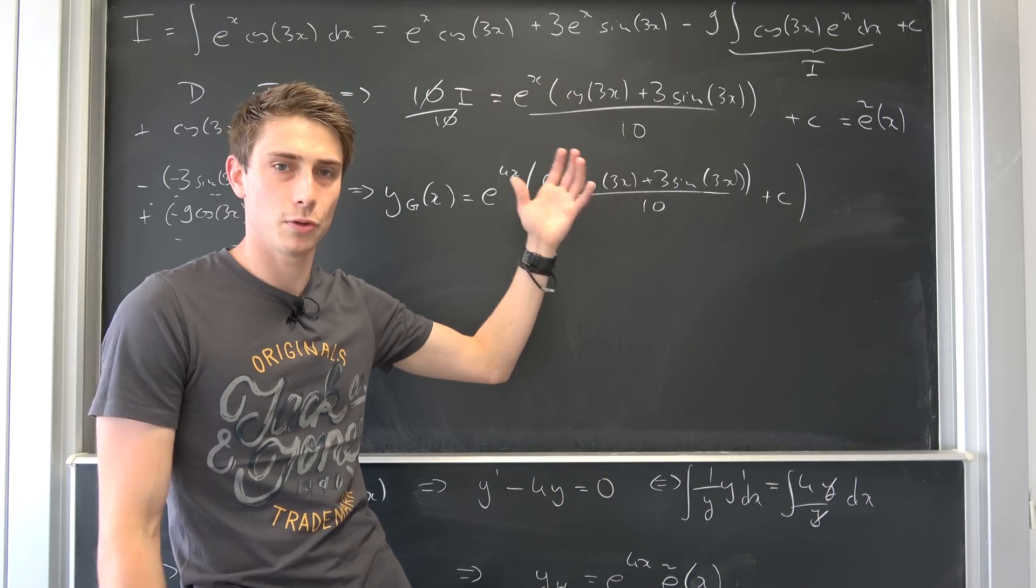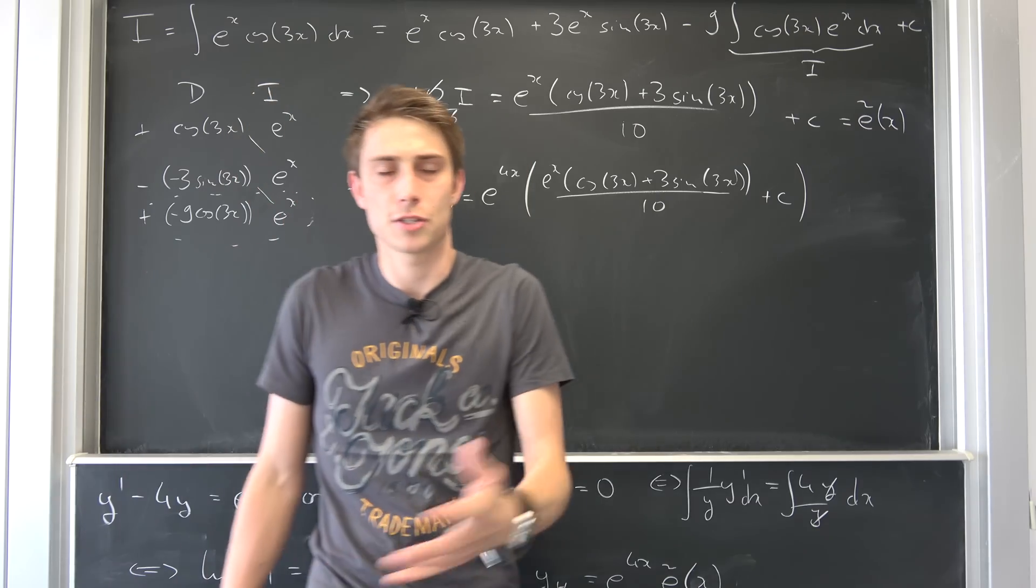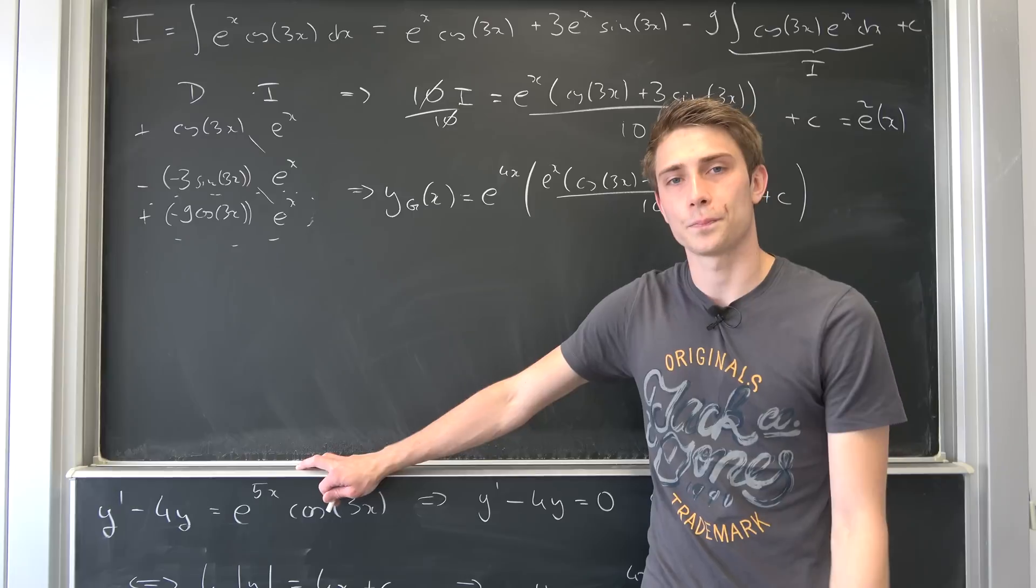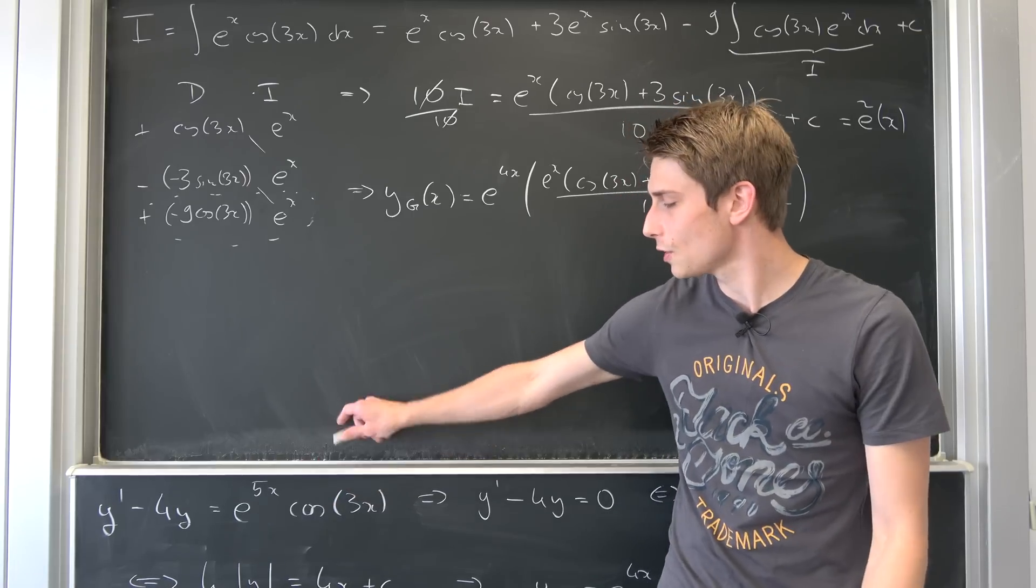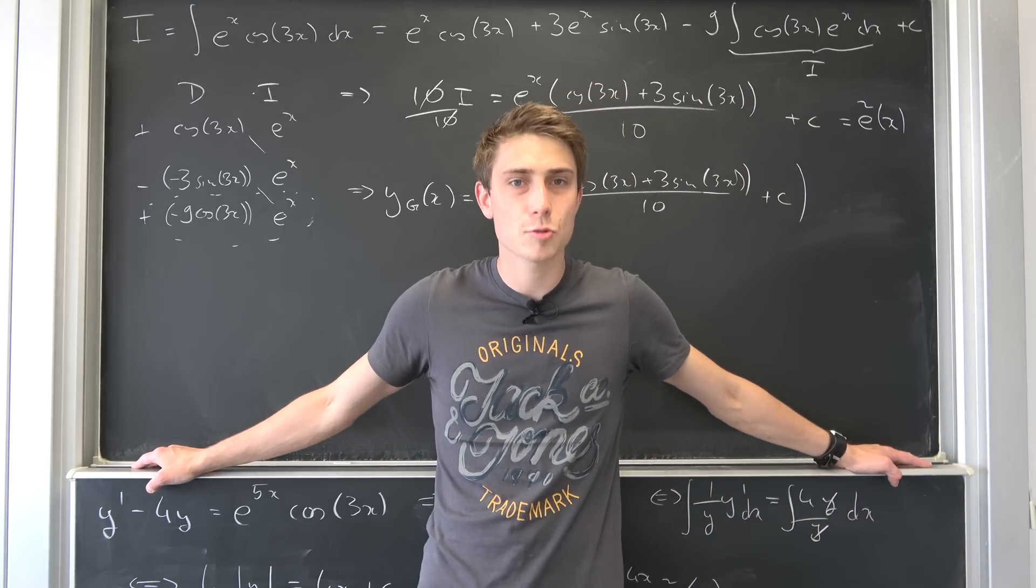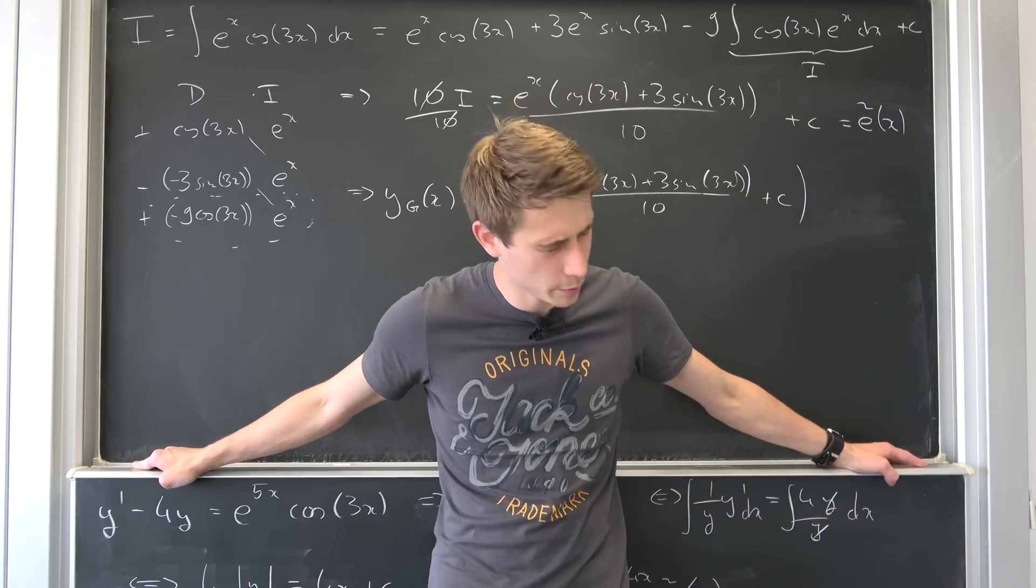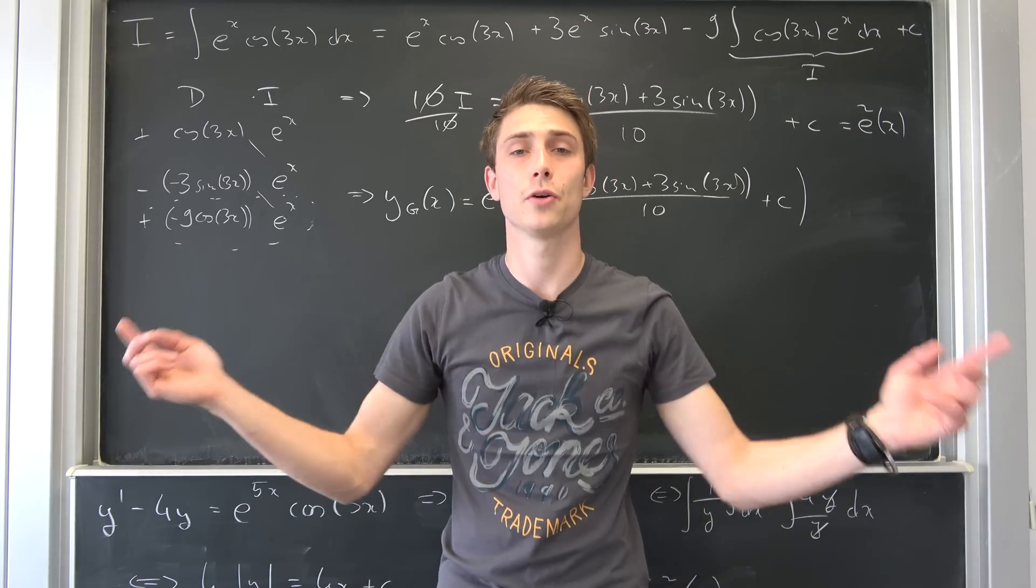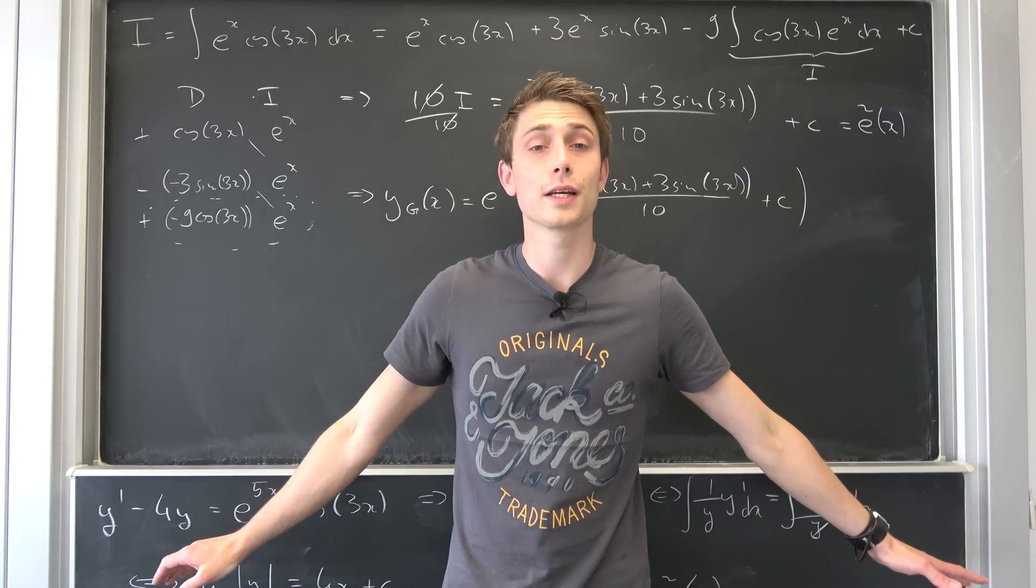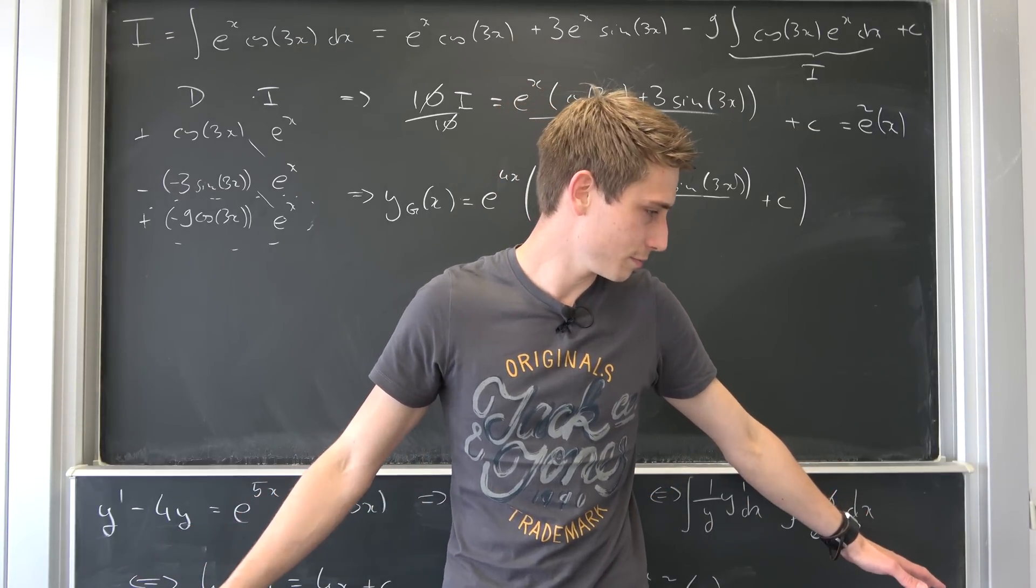And this thing right here is going to solve the original differential equation for all values of c. So you can plug in some initial values for example Y of 0 is equal to 0 for example. I don't know and then you might end up with your desired constant and now we are done. I thank you guys for watching. If you did enjoy this video, please like and subscribe and recommend me if you like. If you want to support me more link to my patreon is in the description. I'm doing all the stuff in my free time.